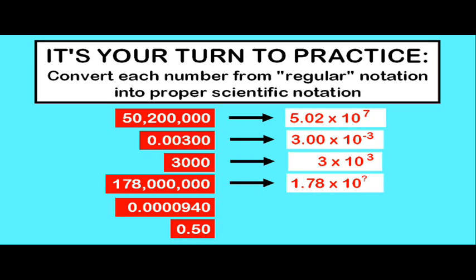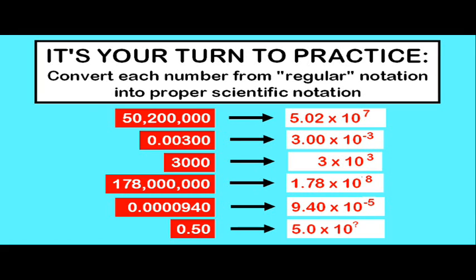Okay, next answer should be one point seven eight times ten to the eighth power. Then, we have nine point four zero, and I'm adding the zero as a significant digit. Nine point four zero times ten to the negative fifth power. And, finally, five point zero times ten to the negative first power. Now, for any of these problems, if you got them incorrect, hopefully you understand what mistakes you made. All of the coefficients fall between one and ten, and for all numbers that are greater than ten, I used a positive exponent, and for all numbers that were less than one, I used a negative exponent.